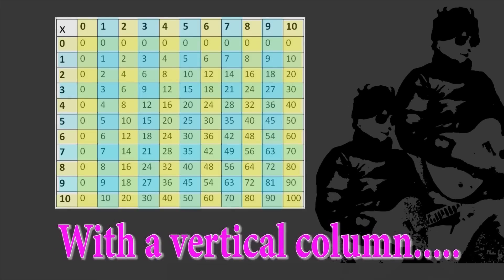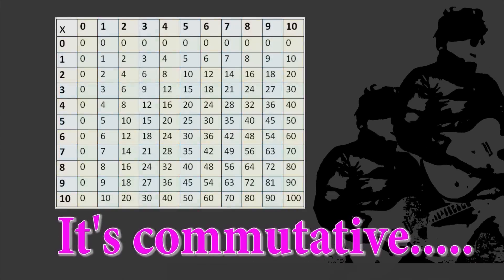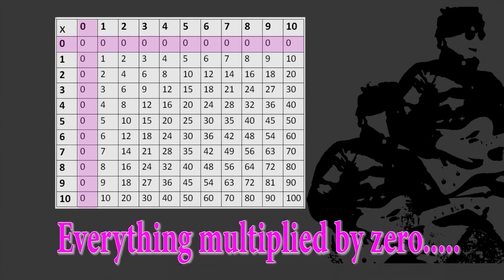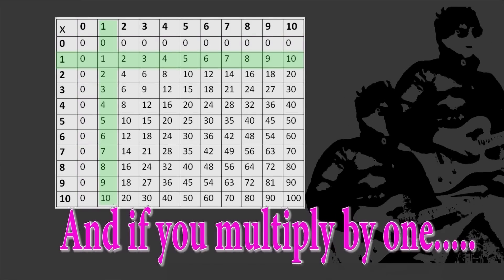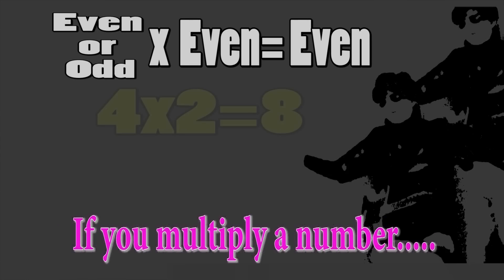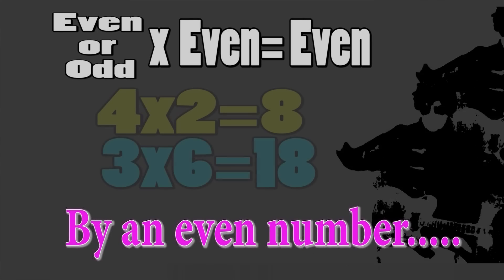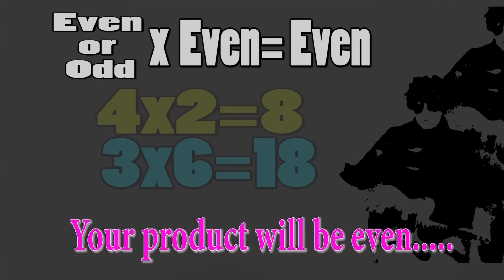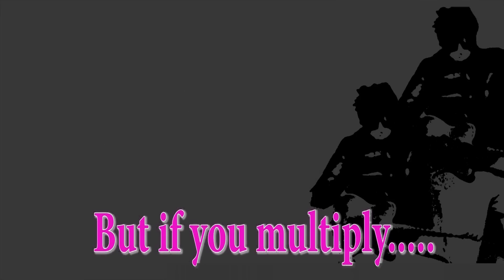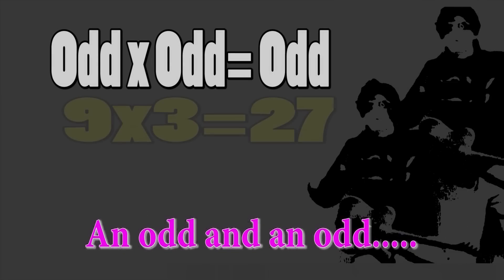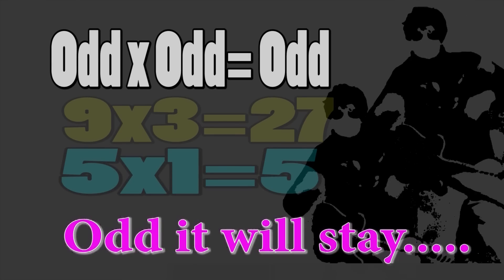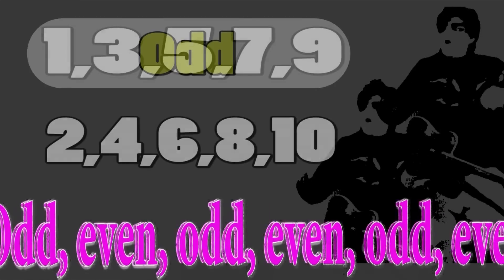On multiplication tables you notice things. Every row has a match with a vertical column — it's commutative. Everything multiplied by zero is zero, and if you multiply by one your number stays the same. If you multiply a number by an even number your product will be even, but if you multiply an odd by an odd it will stay odd.